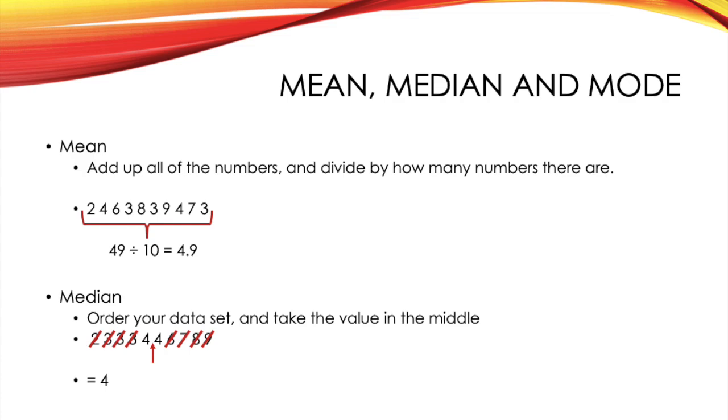When calculating the mean, if you see that there's an extreme value, it's usually best to remove this value and calculate the mean without it. Otherwise, it will severely skew your mean value.